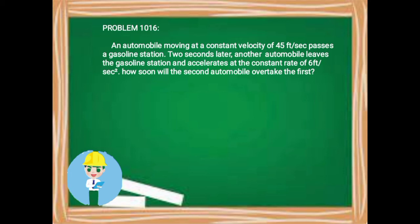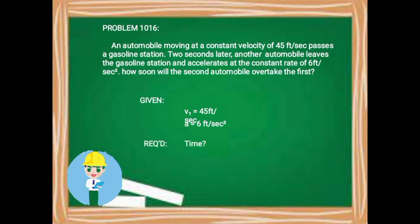Next problem: an automobile moving at a constant velocity of 45 feet per second passes a gasoline station. Two seconds later, another automobile leaves the gasoline station and accelerates at a constant rate of 6 feet per second squared. How soon will the second automobile overtake the first? Given: v = 45 ft/s, a = 6 ft/s², and we need to find the time.